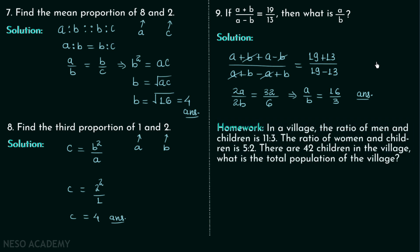The final problem of this lecture is a homework problem. In a village, the ratio of men to children is 11:3, the ratio of women to children is 5:2, and there are 42 children in total. We need to find the total population of the village. Post your answer in the comment section. See you in the next lecture.